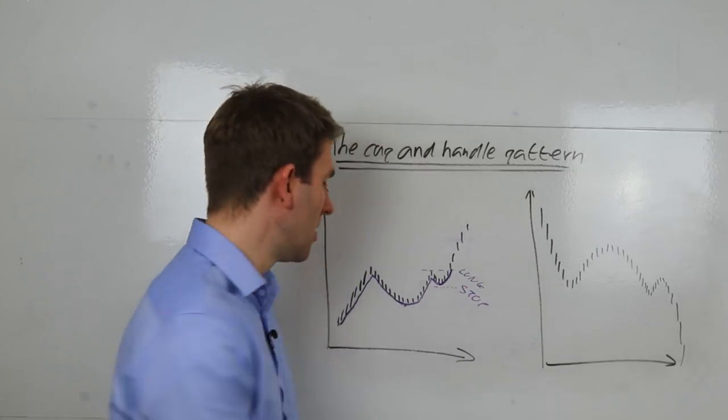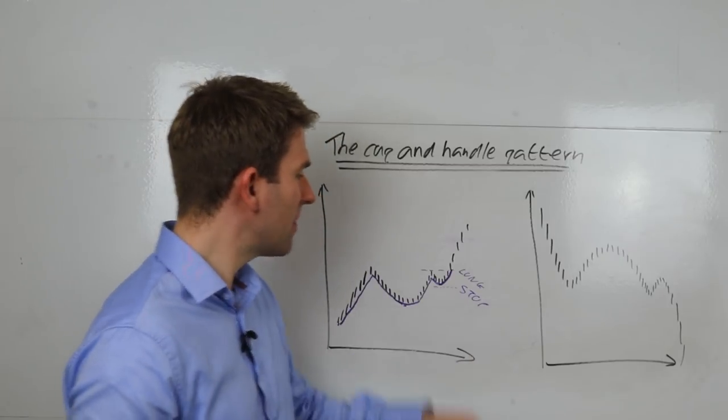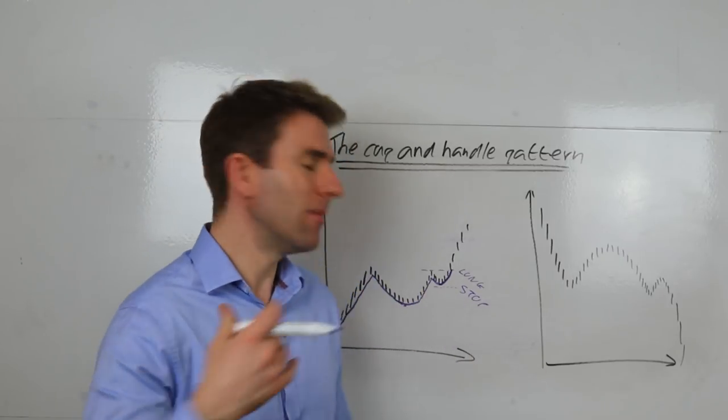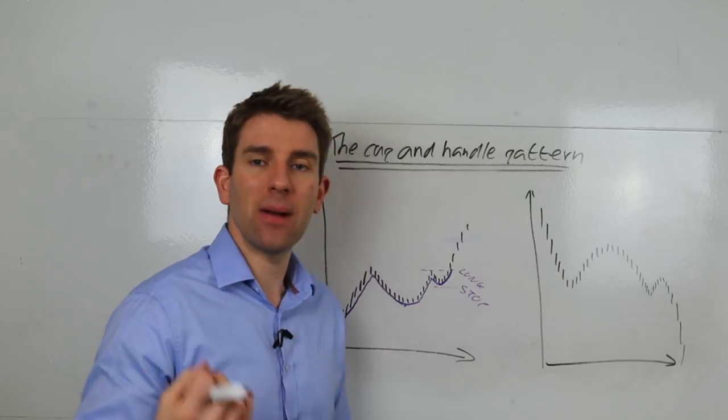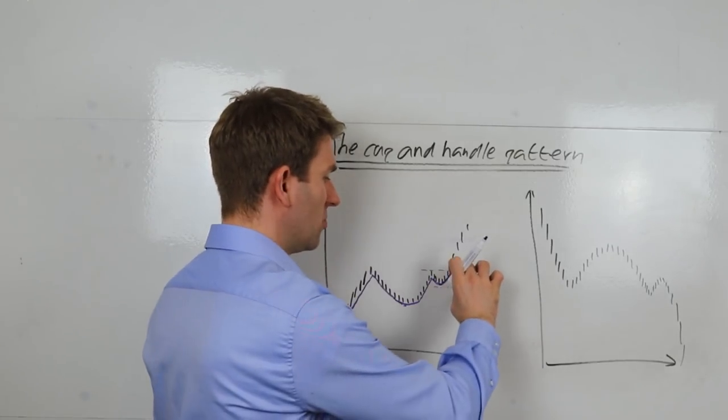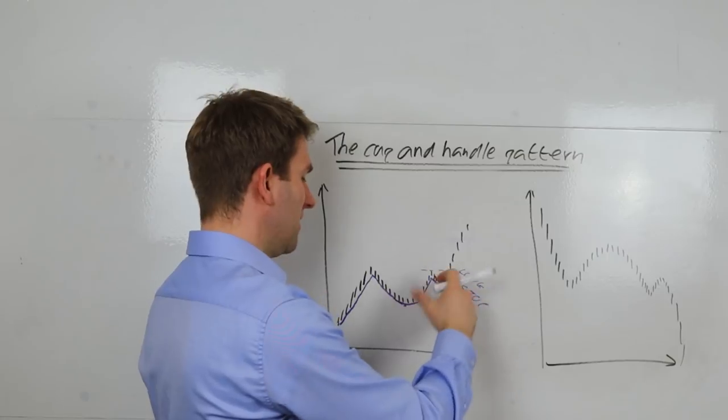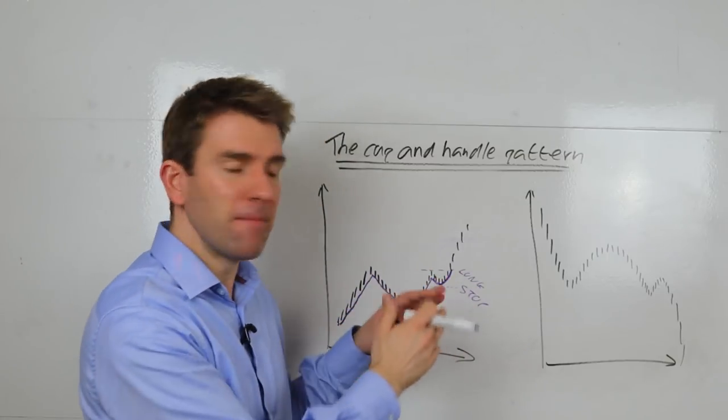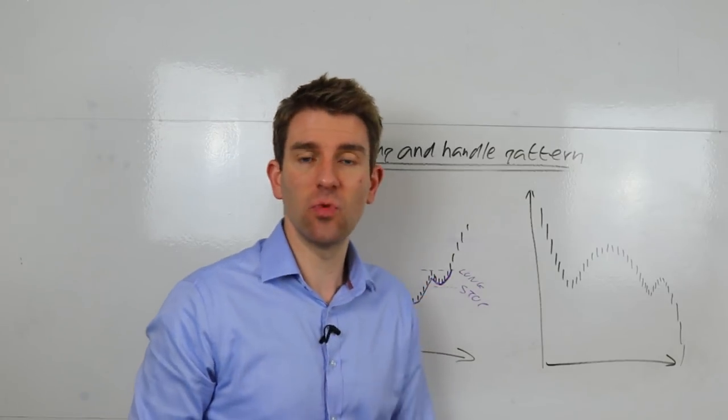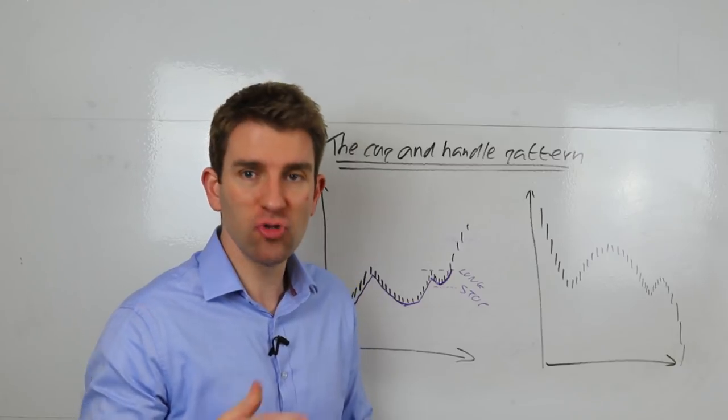Our entry would be a long above this high here. The good thing about this one is our stop would be under that handle. Rather than stuff like the scallop which is broader, wider, longer with your stop right down here, this is a bit more aggressive, tighter, better on the risk reward ratio.